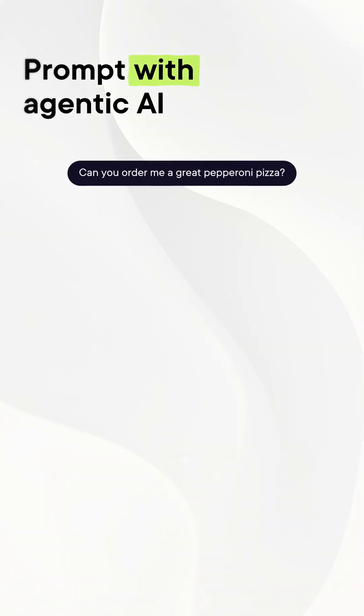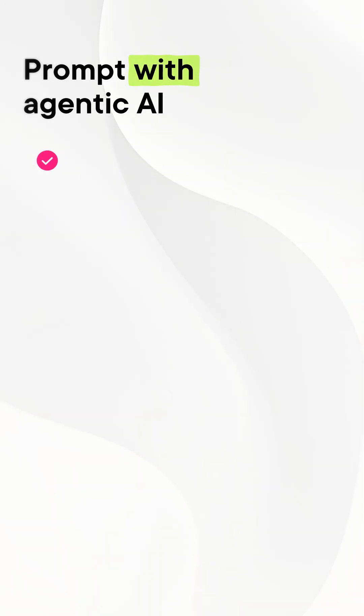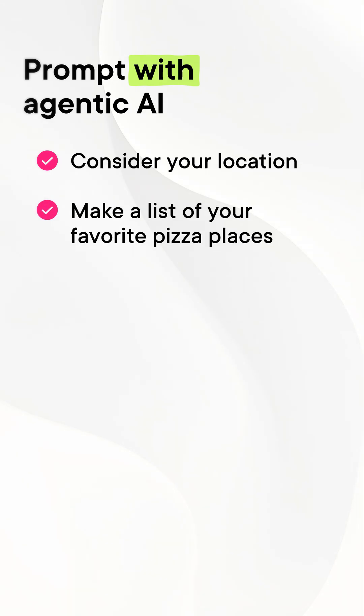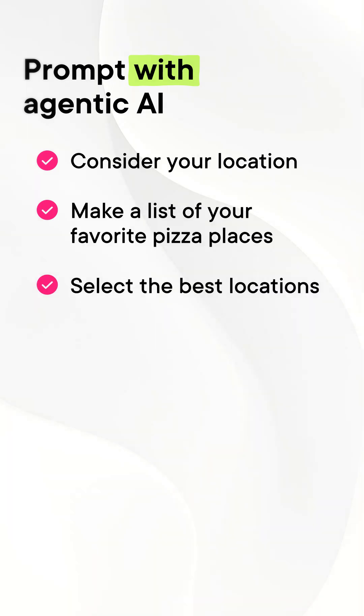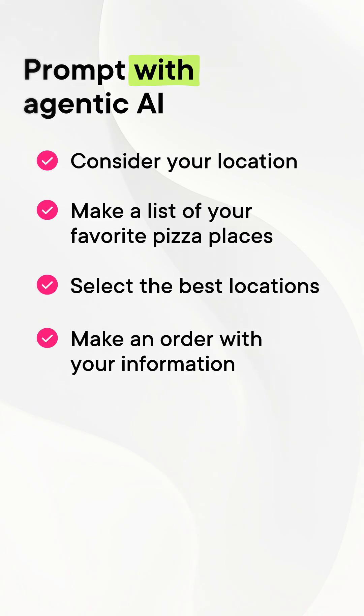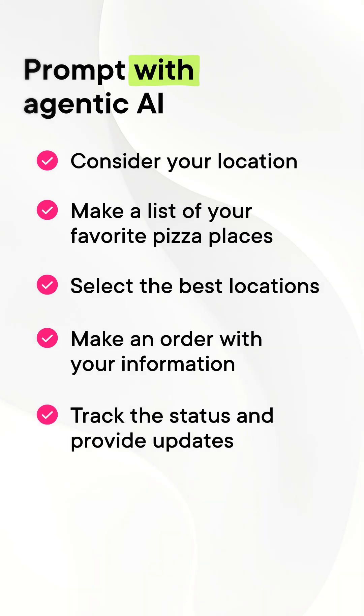However, with an agentic AI, you could ask: can you order me a great pepperoni pizza? And it could consider your current location as a starting point, make a list of all your favorite pizza places and high-ranked locations nearby, select the best of these locations that have a pepperoni pizza on the menu, make an order, including entering your address and payment details.